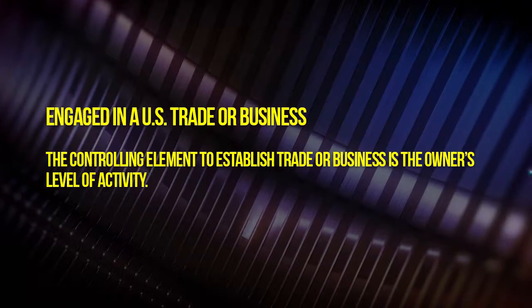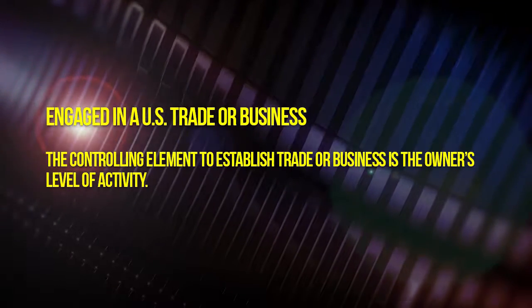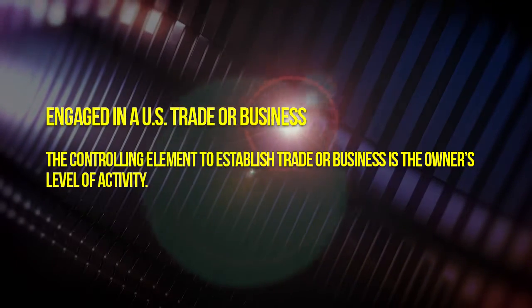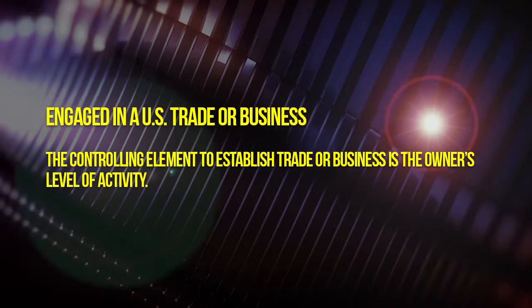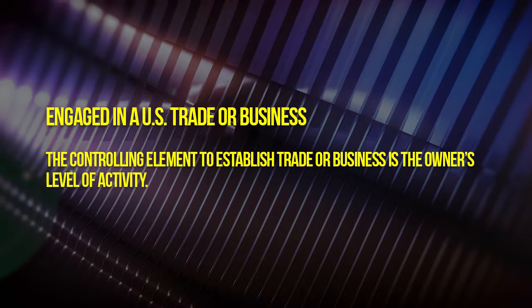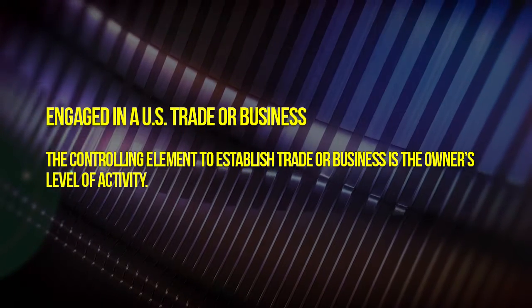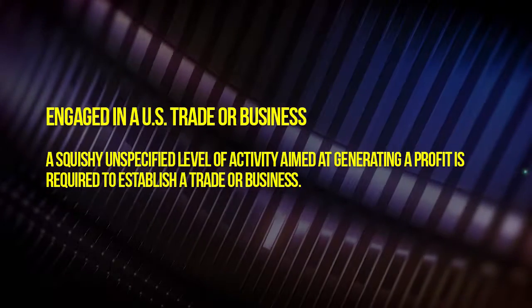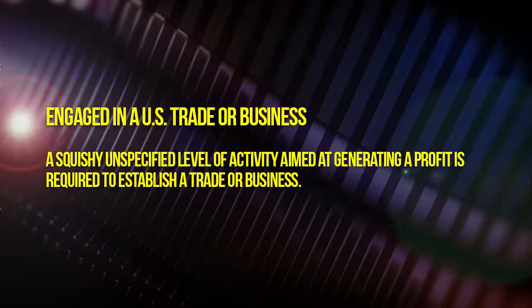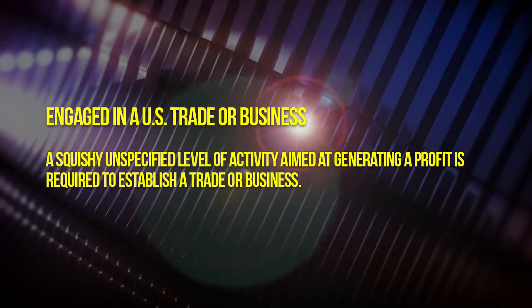The controlling element in establishing a U.S. trade or business is the level of activity conducted by the foreign individual or foreign entity within the United States. On one end of the spectrum, we have passive investment-like activity — for example, you buy one asset in the United States and just wait for it to appreciate. On the other end is the active conduct of trade or business. All that's required is a squishy concept of sufficient activity aimed at generating a profit within the United States to establish a trade or business.